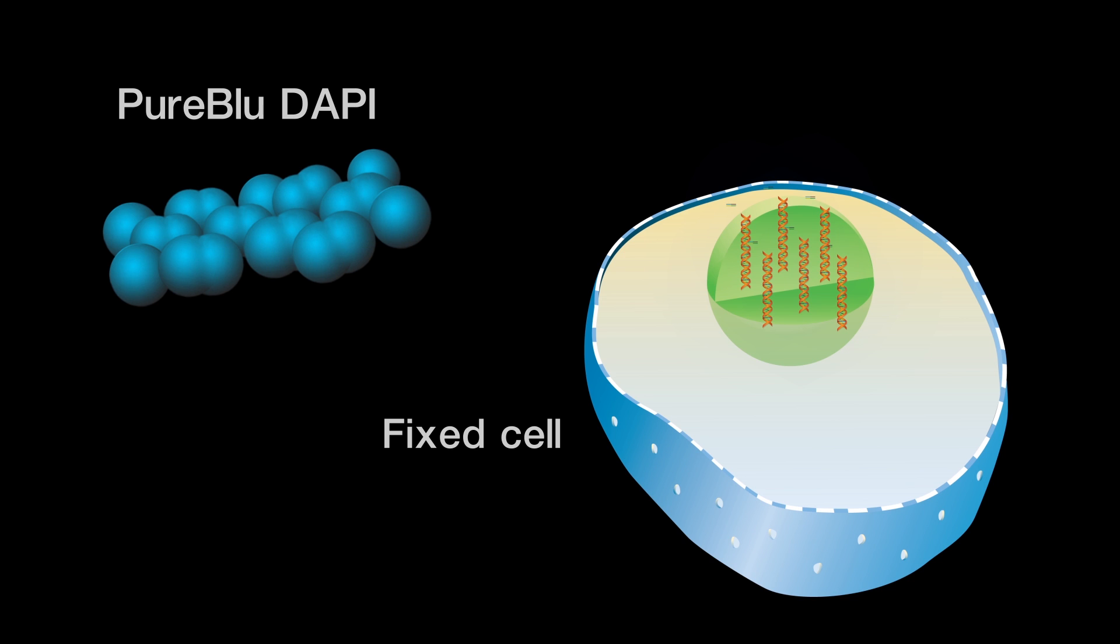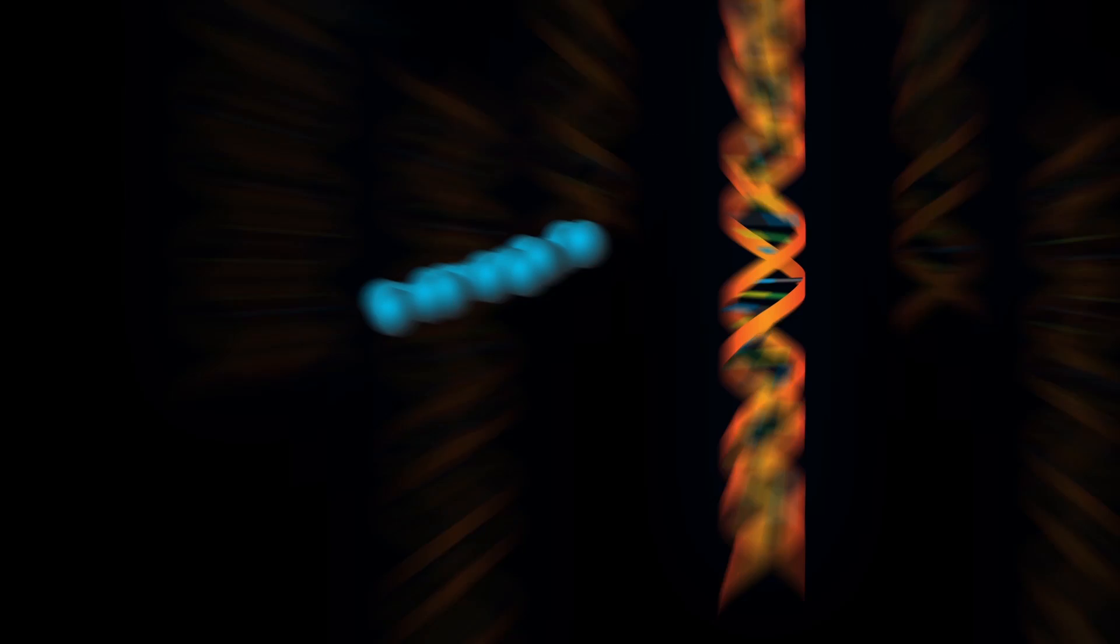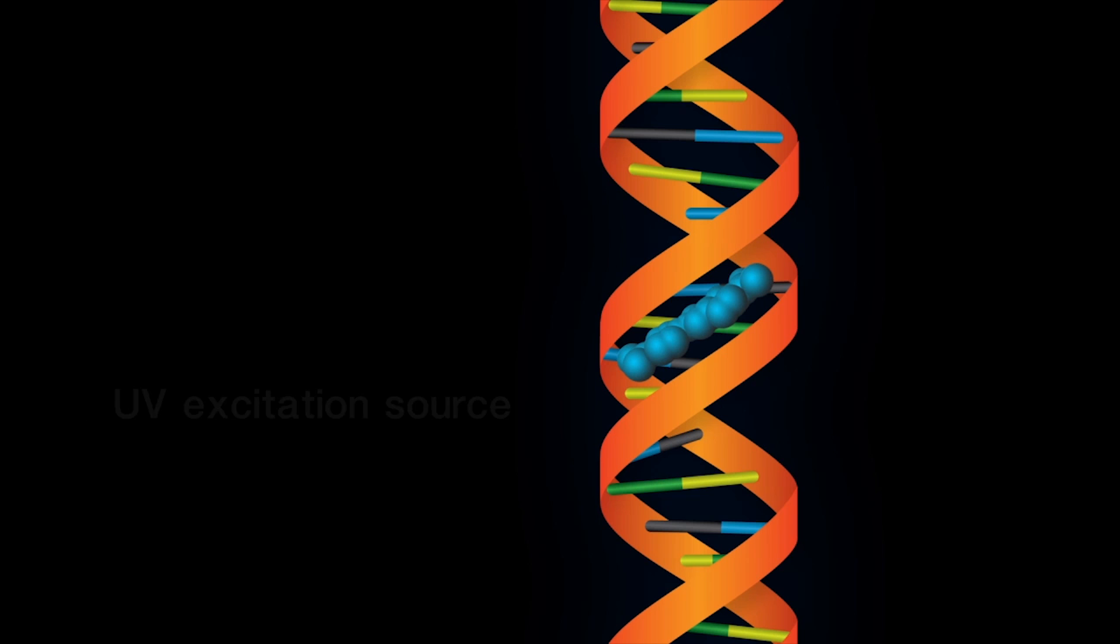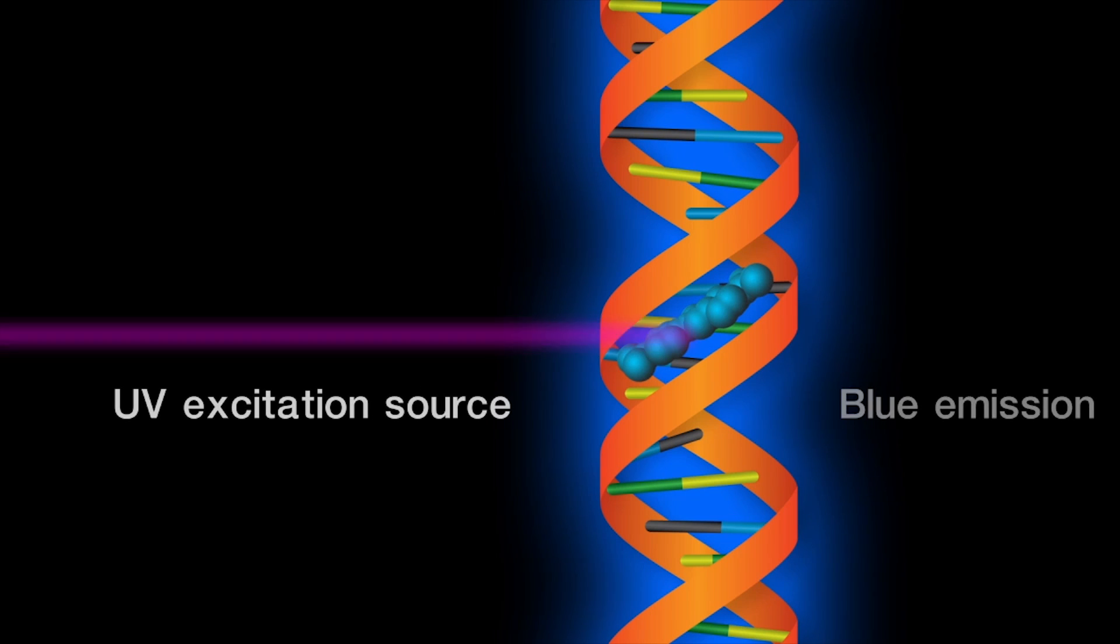When DAPI is in close proximity to double-stranded DNA, it binds to the minor groove of adenine and thymidine-rich regions. Upon excitation in the ultraviolet range of the light spectra, DAPI releases a bright blue fluorescence that can be detected by a blue filter.